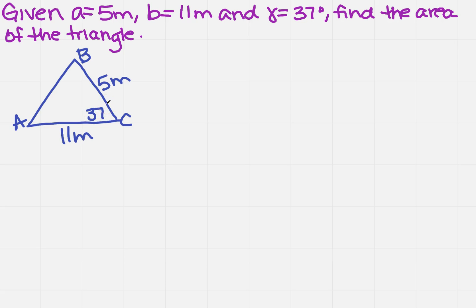So how am I going to solve that? Well, there's a formula. Remember, I've got a side and an angle and a side. So I know that the area is one half A times B times the sine of gamma.